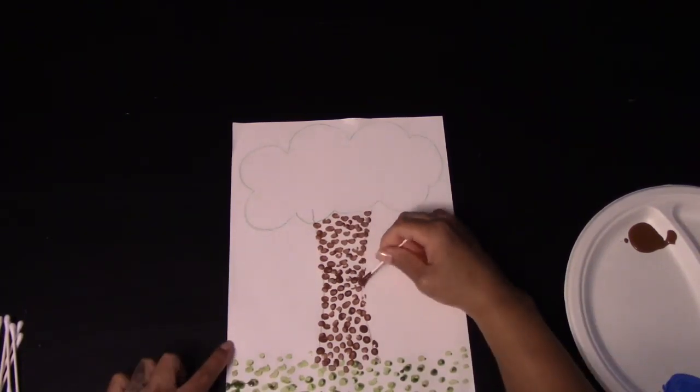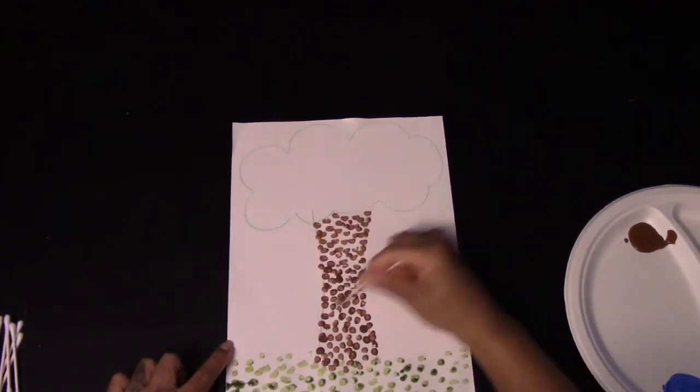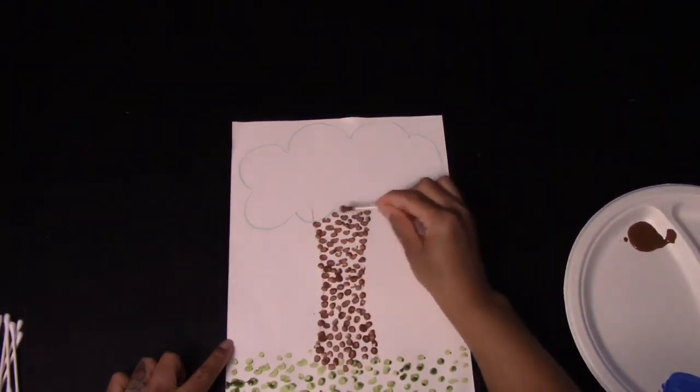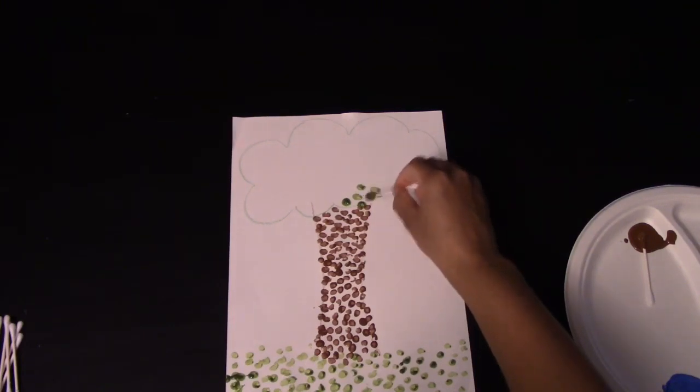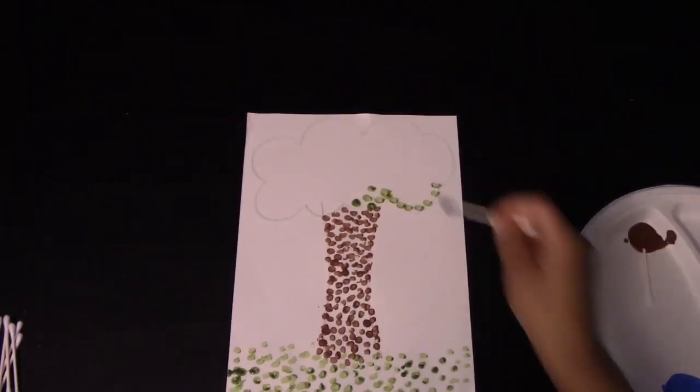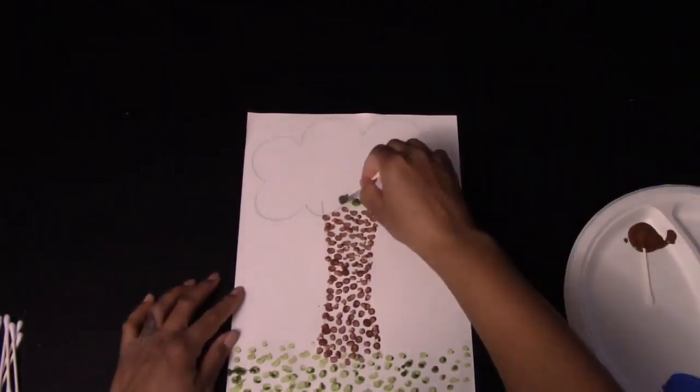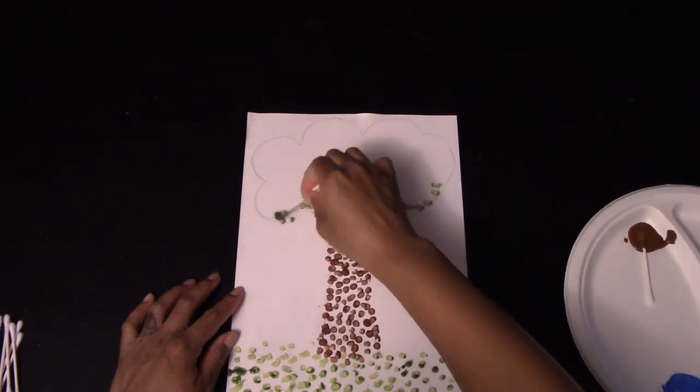Once you complete this part, you can go ahead and take your Q-tip, dip it into the green, and you can begin drawing your dots at the top of your tree. If it helps, you can follow along the green crayon that you drew and fill in the rest afterwards.